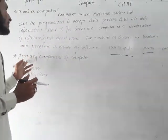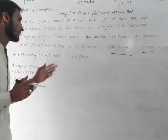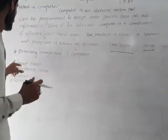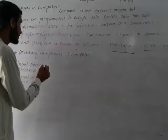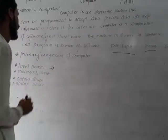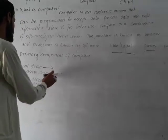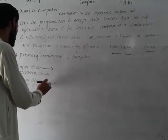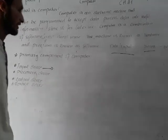The primary components of a computer system are: first, the input device; second, the processing device; third, the output device; and fourth, the storage device.